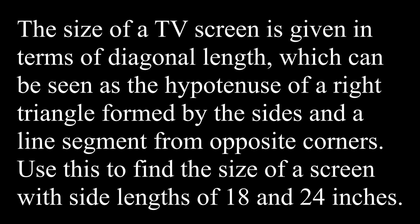For this example, we're going to think about TVs, where generally speaking, the size of a screen is given in terms of diagonal length, which can be seen as the hypotenuse of a right triangle formed by the two sides and a line segment from opposite corners. We'll see what that looks like in just a second.